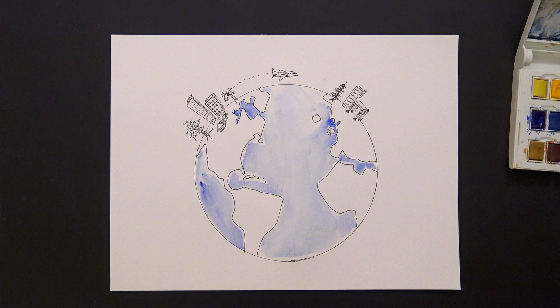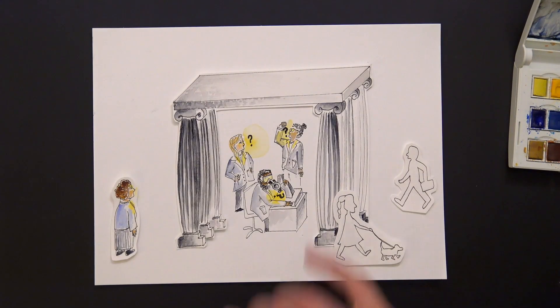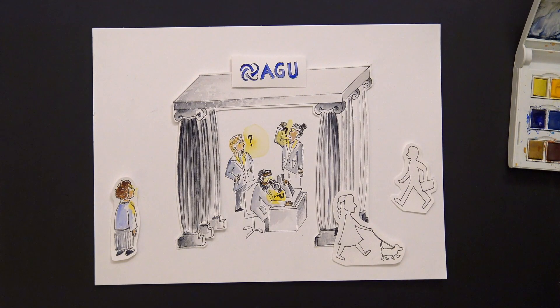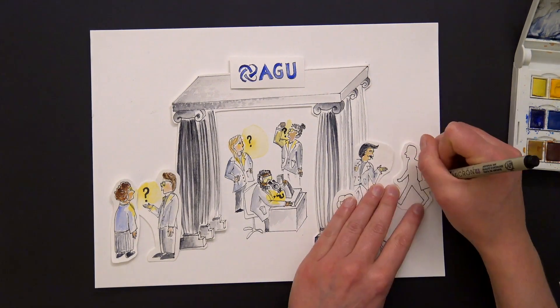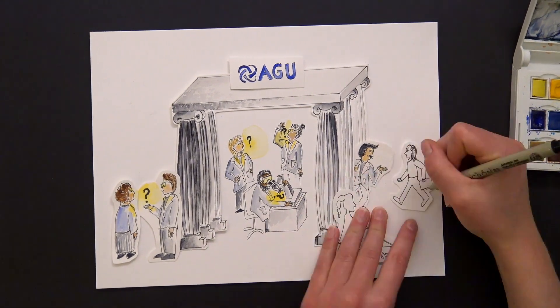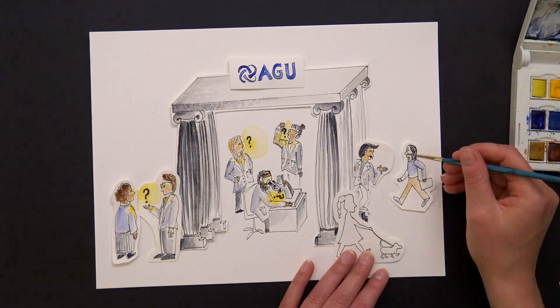If the American Geophysical Union is any indication, more earth scientists than ever before are doing their research in collaboration with non-researchers, who have expertise in what kinds of knowledge is needed, who have a stake in research outcomes, and who can use the science to inform decisions and actions.